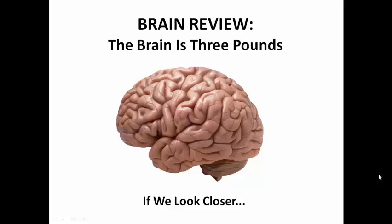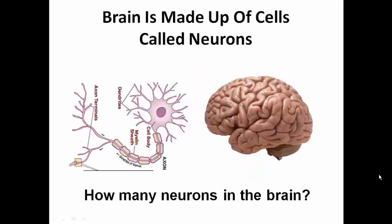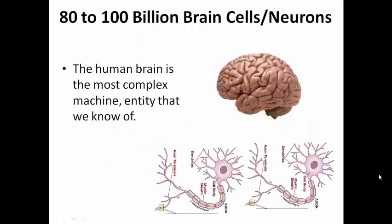If we look closer, if we zoom in, our brain is made up of brain cells. This is one brain cell — we're going to talk a lot today about the interaction of these brain cells and how they control our different mood states and feelings. How many do we have? Anywhere between 80 to 100 billion. That makes the brain the most complex machine entity that we know of.